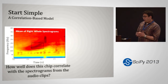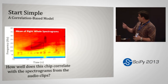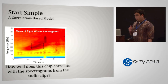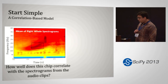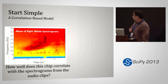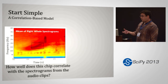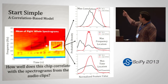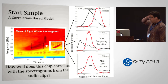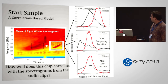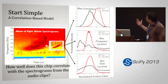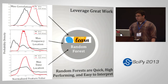I took the average of all the right whale spectrograms, and in that boxed region there's a strong arc feature similar to the sample from the competition website. I computed how well a chip from that average correlates with spectrograms from the audio clips — particularly how well it correlates with the right whale samples versus the noise samples. From that I generated three features: the max normalized cross-correlation, and the corresponding frequency and time locations of that maximum. That looked like decent separation, so I threw it into a random forest to see what happens.